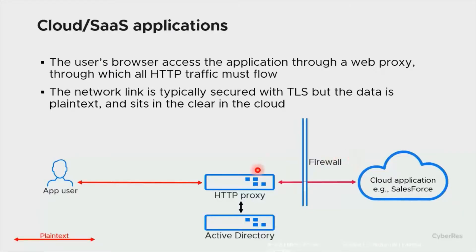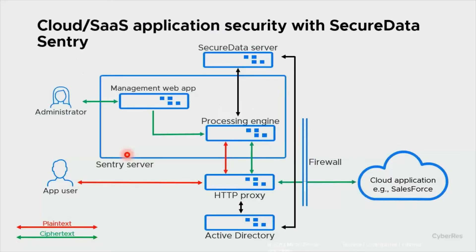In a typical enterprise, users access the internet through a corporate proxy that inspects all HTTP traffic looking for threats like viruses and malware. Users can be required to authenticate to use the proxy and gain access. Typically with nearly every website and SaaS application, the communications between the user's browser and the SaaS endpoints are encrypted using TLS.